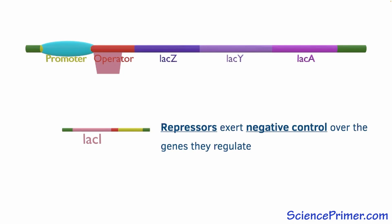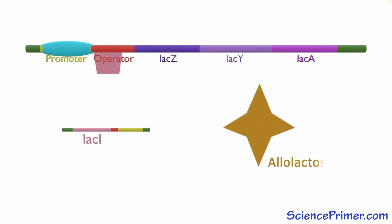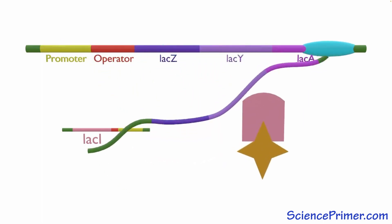To allow expression of the LAC operon, LAC-I needs to be removed from the operator. Allolactose, which is formed from lactose by LAC-Z, is the signal molecule E. coli cells use to detect the presence of lactose. When lactose is present in the cell, some of it gets converted to allolactose. This allolactose binds to LAC-I, causing a conformational change in LAC-I that makes it separate from the operator, allowing RNA polymerase to transcribe the operon.